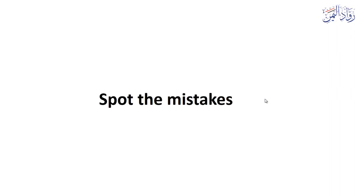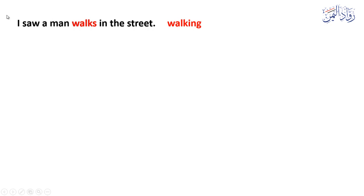Spot the mistakes. These are some grammatical lessons and we will explain each point. First lesson: 'I saw a man walks in the street.' There is a rule about sense verbs: sense verb followed by an object, followed by a verb in the ING form. 'See' is a sense verb, 'a man' is the object, but the verb here is in the present simple form. We need to change it to the gerund or ING form. The correct sentence is: 'I saw a man walking in the street.'